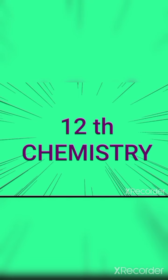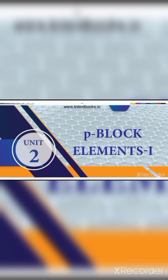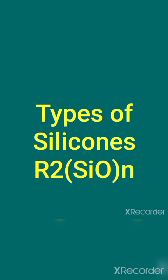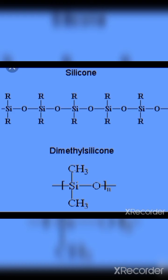12th standard chemistry, unit 2, p-block elements. Types of silicones: what are the classifications of silicones based on their structure? The first type is linear silicones, which are obtained by the hydrolysis and subsequent condensation of dialkyl or diaryl silicon chlorides.